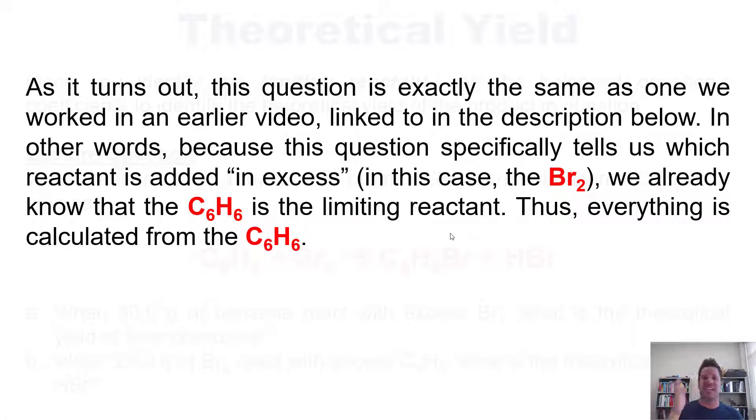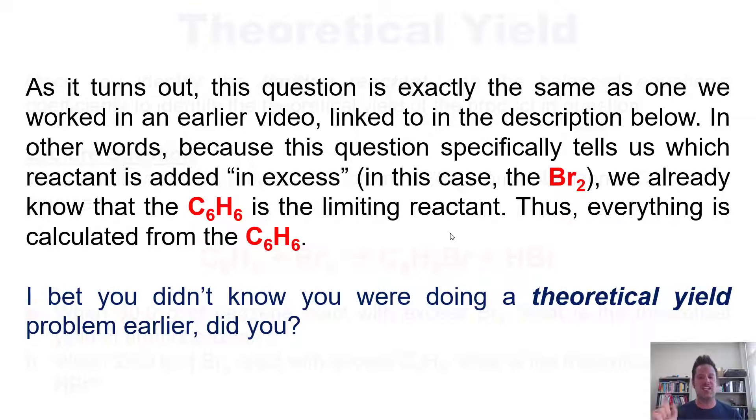See, the question told us that the Br2 is added in excess. So by default, the other reactant, C6H6, is the limiting reactant. Thus, everything is calculated from C6H6. Again, we already did this problem earlier, but you probably didn't know at the time that you were doing a theoretical yield problem, did you? But you totally were. The process that we went through for this question earlier was a theoretical yield. When we obtained the amount or number of moles and grams of bromobenzene we would obtain, that was the theoretical yield of bromobenzene.